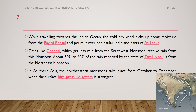When these cold dry winds travel toward the Indian Ocean and cross the Bay of Bengal, there are rains over the Indian Peninsula and certain parts of Sri Lanka. Cities like Chennai, which get less rain from the Southwest Monsoon, receive more rainfall during the Northeastern Monsoon.